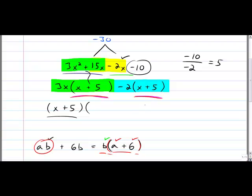When you take x plus 5 out of the green piece, you're left with your 3x. When you take the x plus 5 out of the blue piece, you're left with your minus 2. Now we are done.